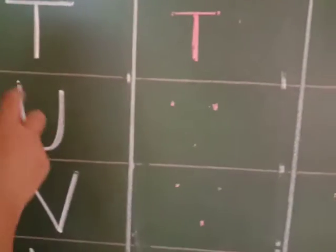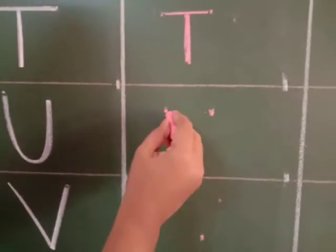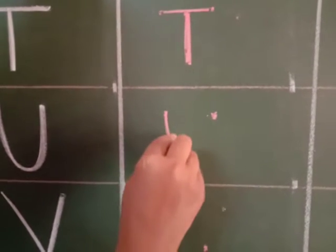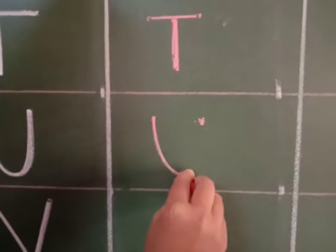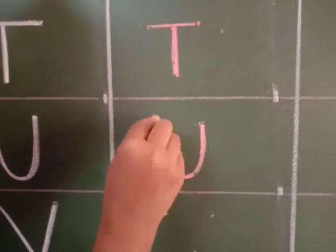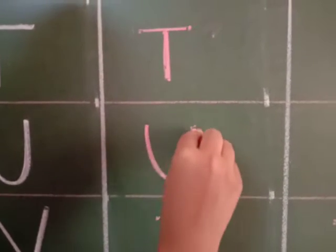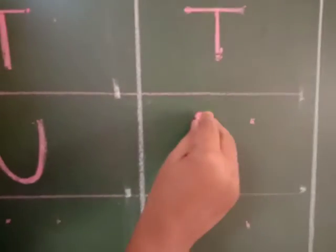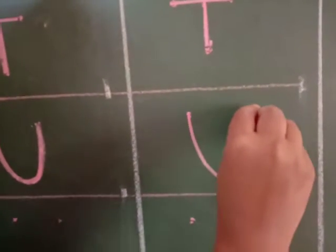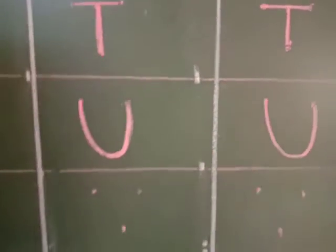Now the next letter is U. I have only given two dots here. You just have to draw a half circle like this and join these two dots — so it will make letter U. U for umbrella. Once again I am going to show you: you have to join these two dots and it makes U for umbrella.